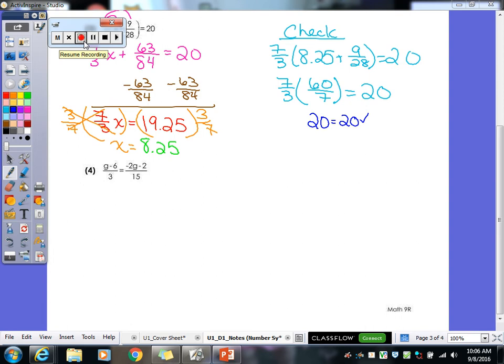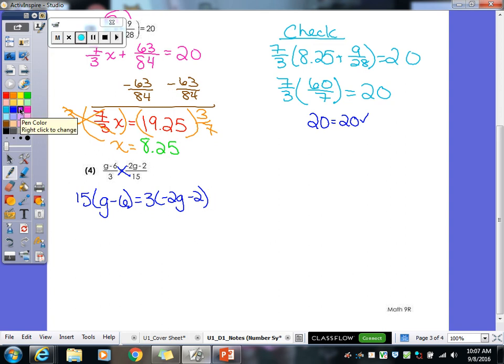Alright, last problem in our notes. We have a fraction equaling a fraction. How do we solve those? Cross multiply. Yeah, the little butterfly thing. But, what you have to remember is I always ask you to write out this step. Otherwise, people forget you need to distribute. This 15 is 15 times both the g and that negative 6. The 3 is times both the negative 2g and the negative 2. So, that's why I ask. Please write it out this way first so that you remember to do both of your distributions there. Okay.